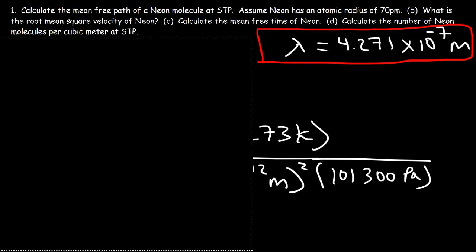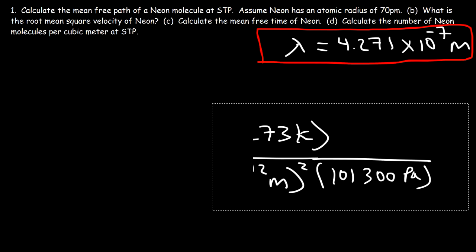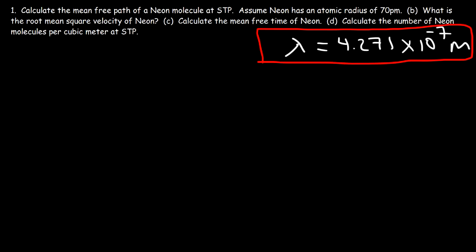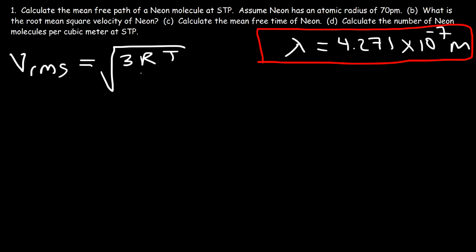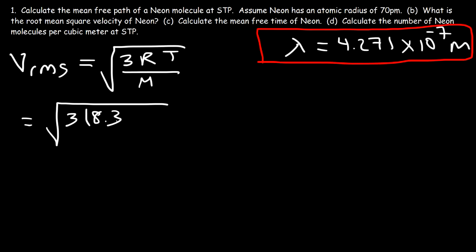Now let's move on to the second part. Part B: what is the root mean square velocity of neon? I'm going to use this formula to get it — it's going to be the square root of 3RT divided by the molar mass in kilograms per mole. R is 8.3145; it's not 0.08206 for this formula.